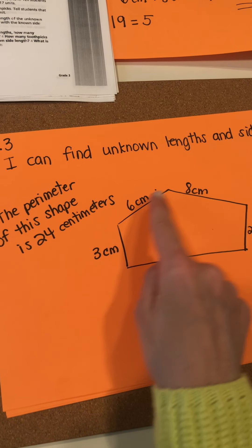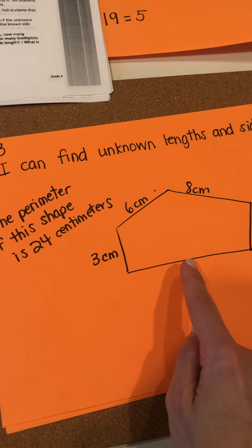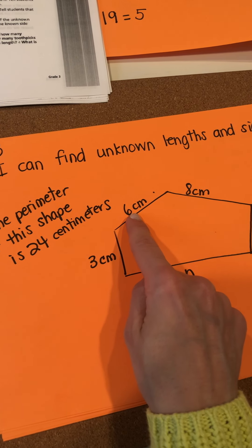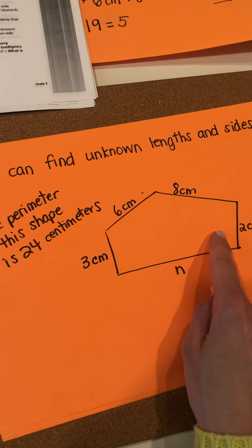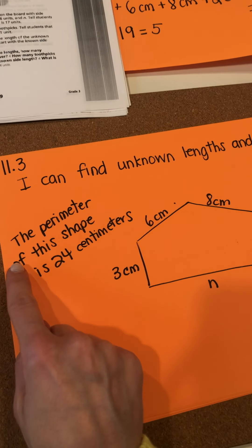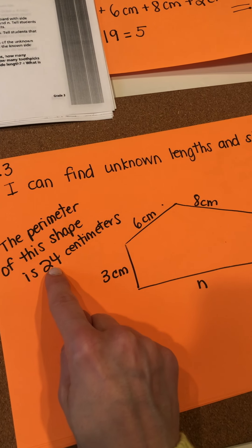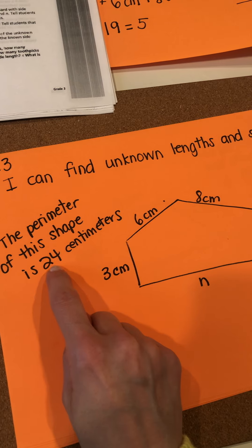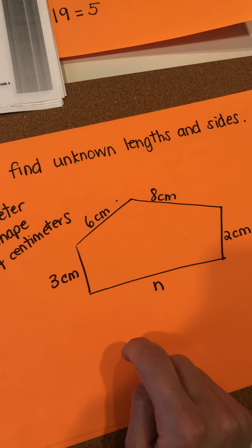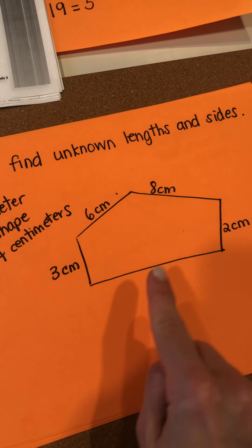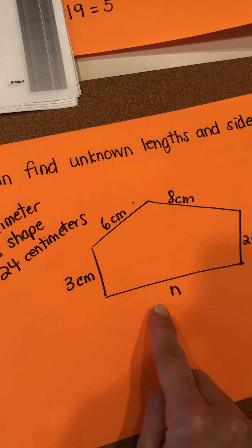So if we have a shape that looks like this — this is a pentagon — we have sides 3 centimeters, 6 centimeters, 8 centimeters, and 2 centimeters. Draw this shape in your notebook. The perimeter of this shape is 24 centimeters, so they're giving us the perimeter. Let's identify the unknown side length. The unknown side length is N.